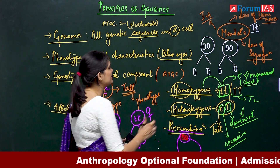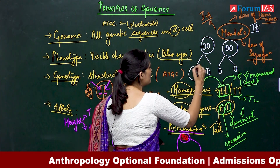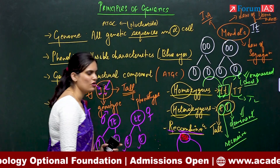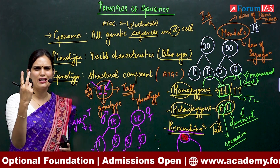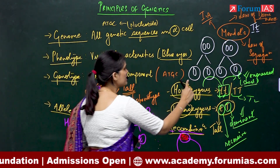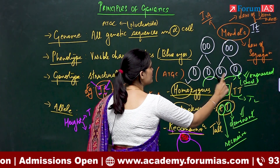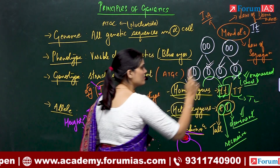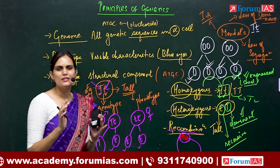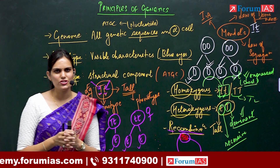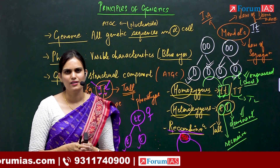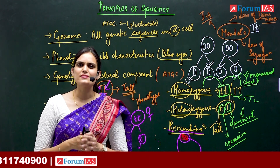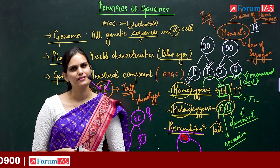Now you understand that there is a 25% chance of each allele combination. Ultimately you will have two alleles, and these are the permutation combinations which exist. I hope you have understood some basics of genetics. Thank you.